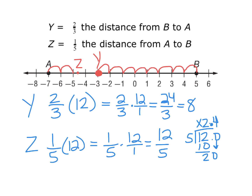Now, if I wanted to give you the actual numerical value of where Z is located, I would subtract seven minus 2.4. Seven minus 2.4 gives me negative 4.6. That makes sense when I look at my number line and where I placed the letter Z.